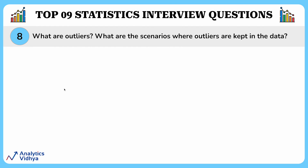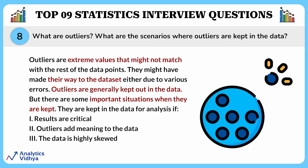The next question asks what outliers are and in what scenarios outliers are kept in the data. An outlier is an observation in a dataset that lies far from the rest of the observations — it is vastly larger or smaller than the remaining values. In certain scenarios, outliers may be kept in the data rather than being removed, as they can provide valuable information or insights. They are kept in the data if the results are critical, if outliers add meaning to the data, or if the data is highly skewed.